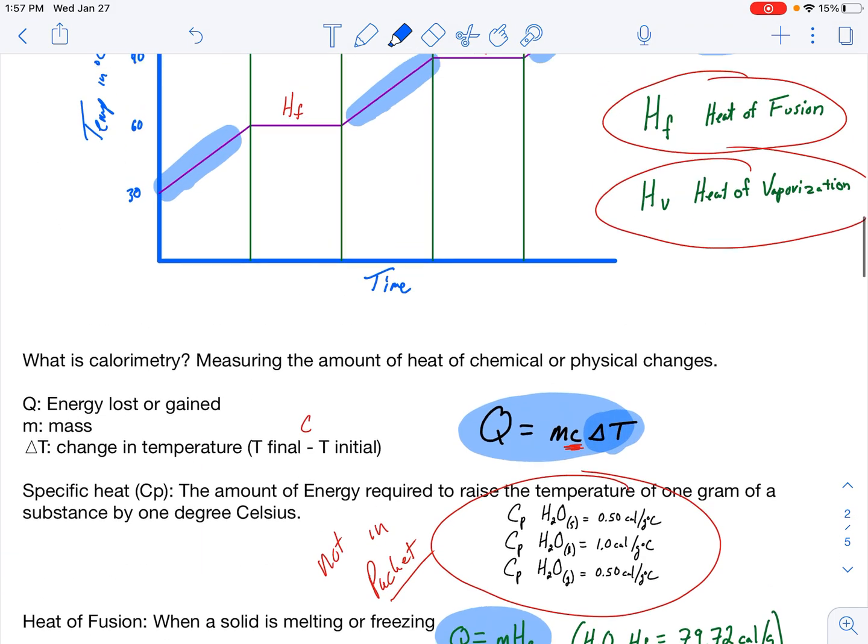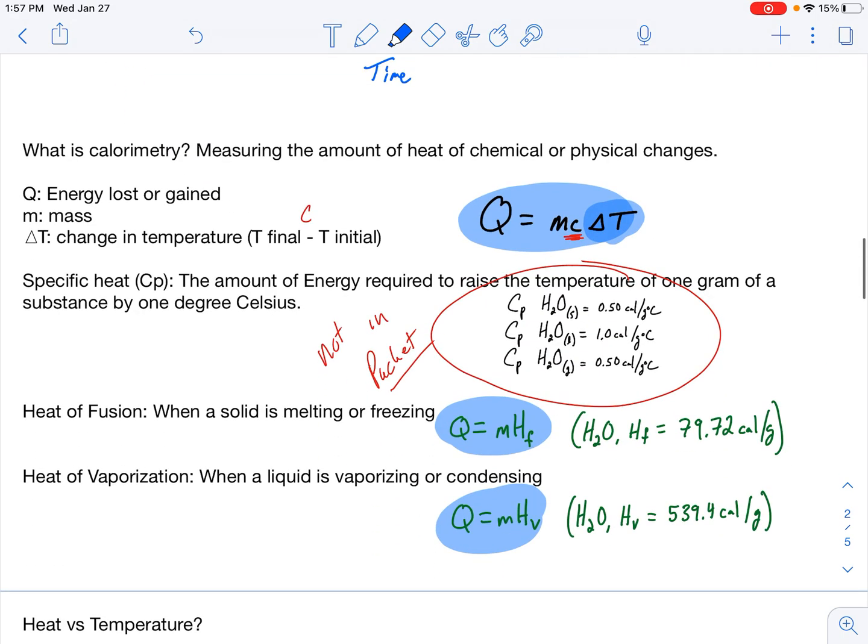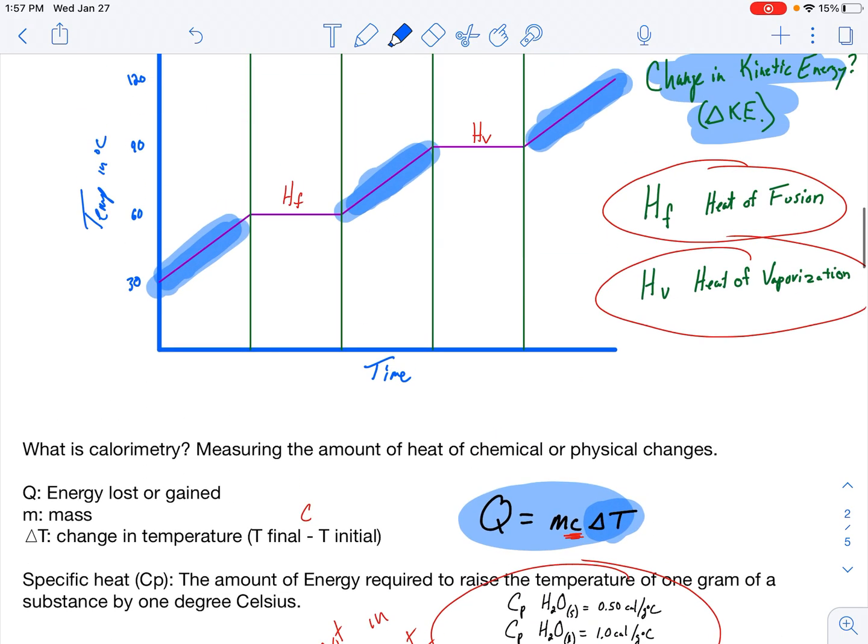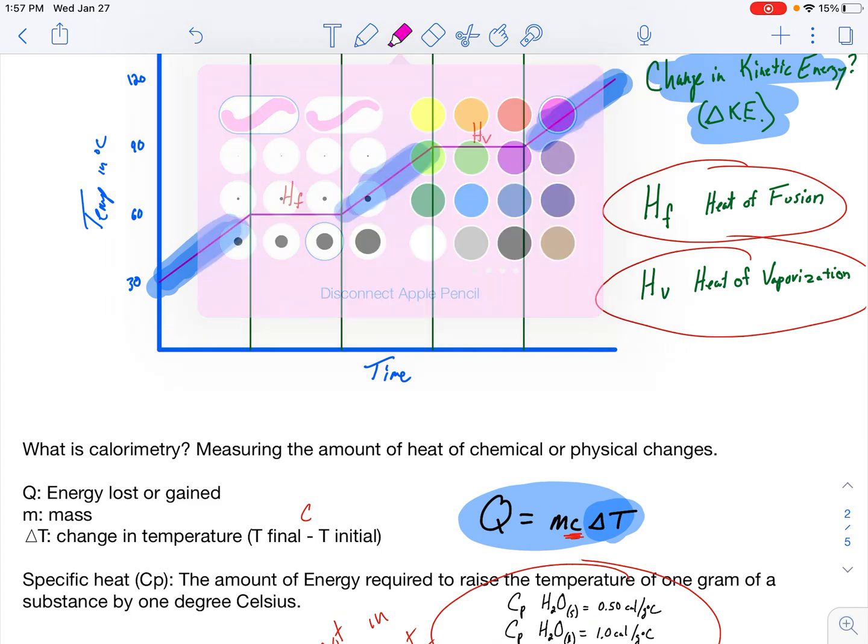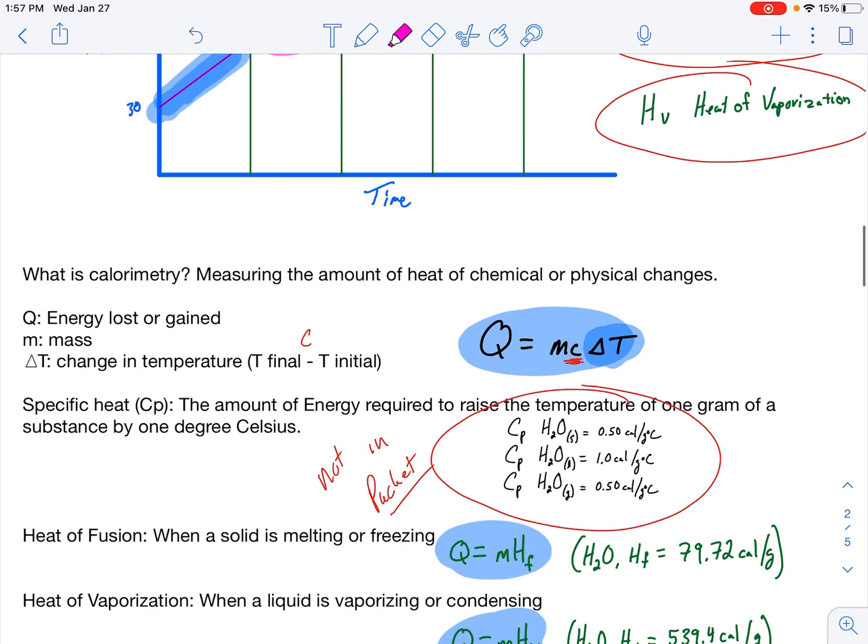If we look, this is change in temperature. Q equals mc delta t. Where do you have changes in temperature? Here, here, and here. That's how it works. Heat of vaporization and heat of fusion, depending upon where you are, also are going to be in different portions of this heating curve. So be wary. When you start to do calculations, you have to use the correct formula depending upon where you are. I'm going to show you an example of that in a heartbeat.